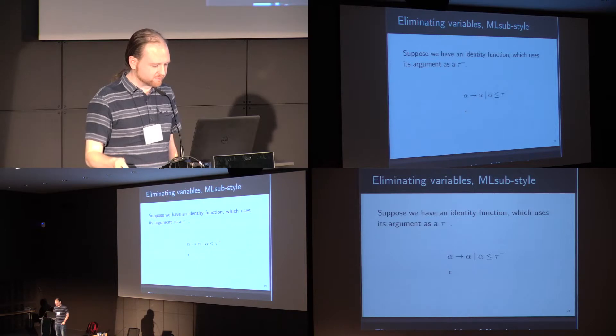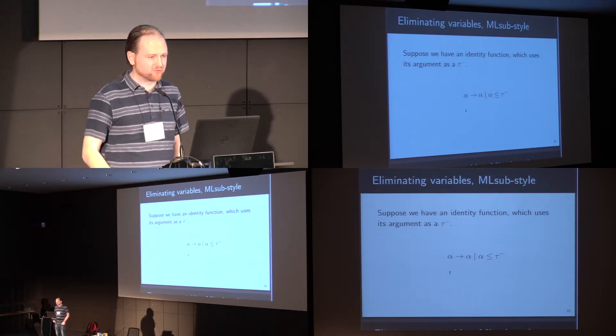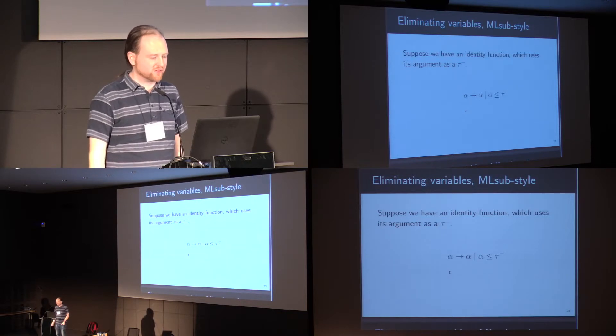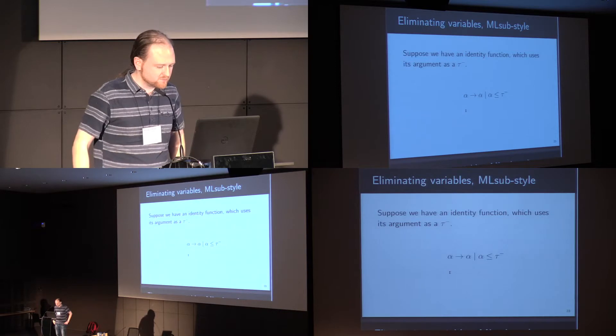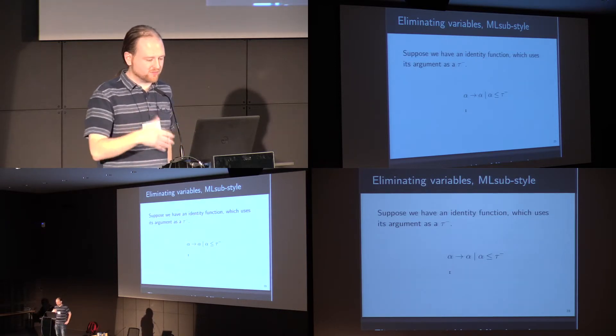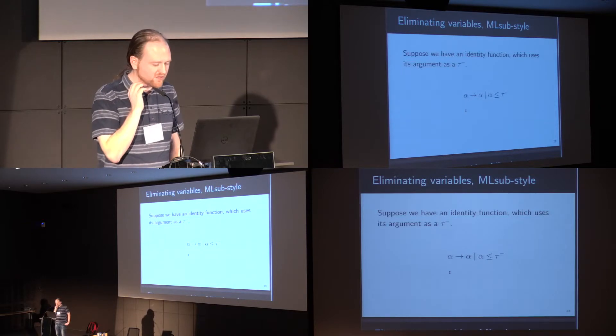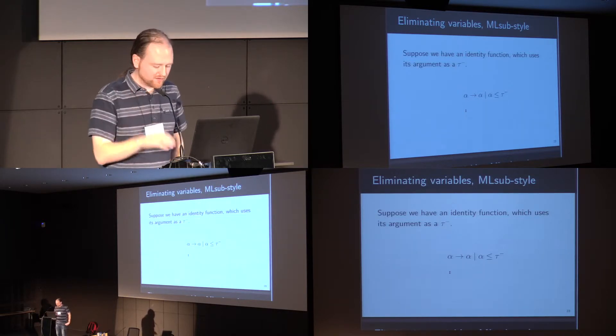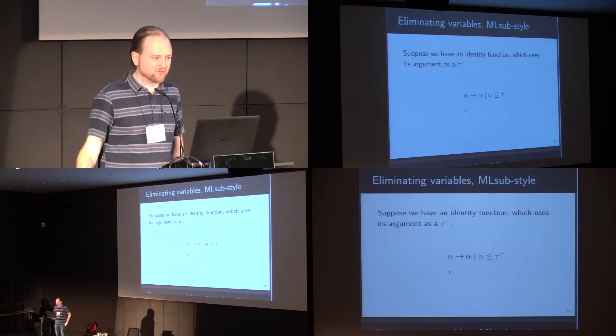In a subtyping system, if a function uses its argument as type t, that doesn't provide an equality constraint. That just says that all values which are alpha must also be t. It's using it as a t-minus, so it's using it as the input to something else. So this constraint is not solved... We can't solve this by simply replacing all occurrences of alpha with t-minus, because we don't know those are the same.